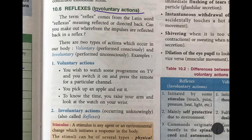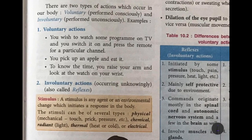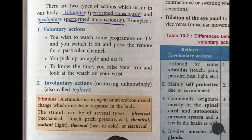Now we talk about reflexes, which are involuntary actions — not under our control. The term reflex comes from a Latin word meaning reflected or directed back. There are two types of action in our body: voluntary, which is performed consciously and is under our control, and involuntary, which is performed unconsciously. Voluntary actions include switching on the TV and pressing the remote for a particular channel.